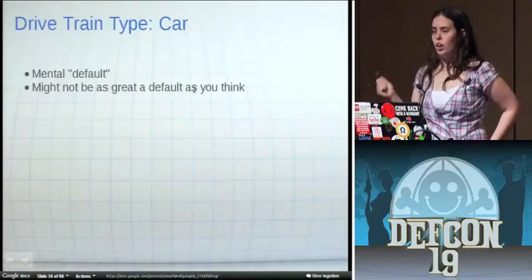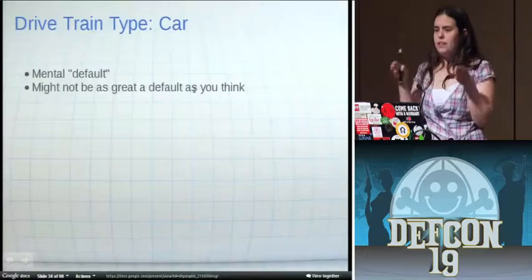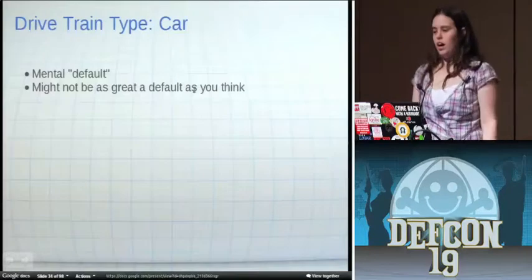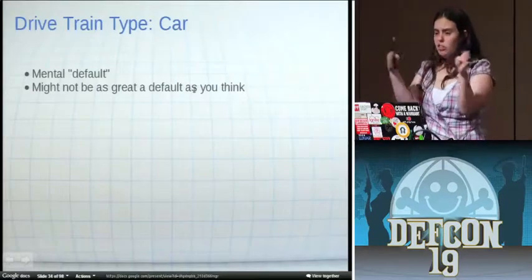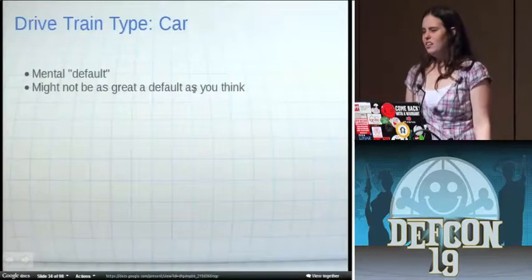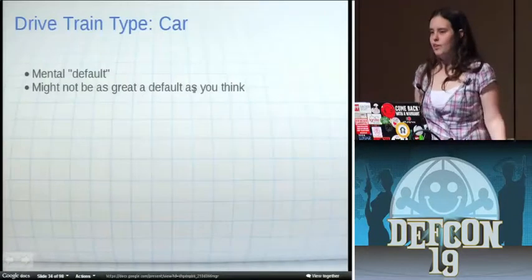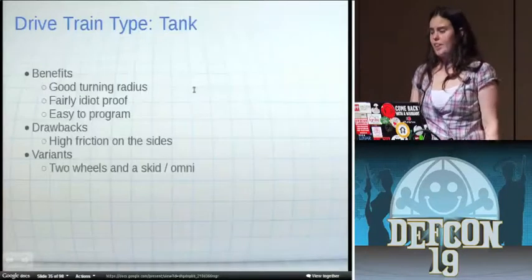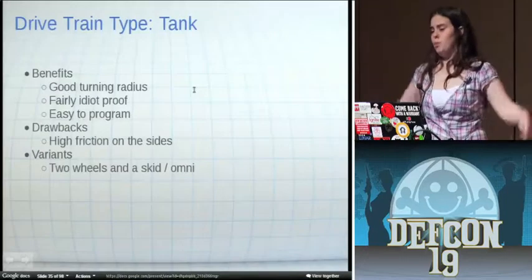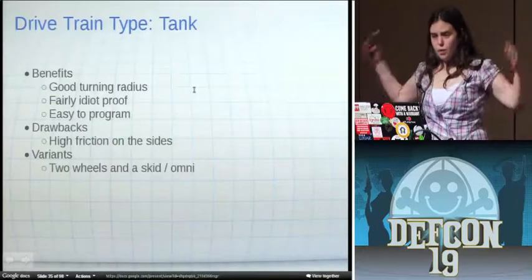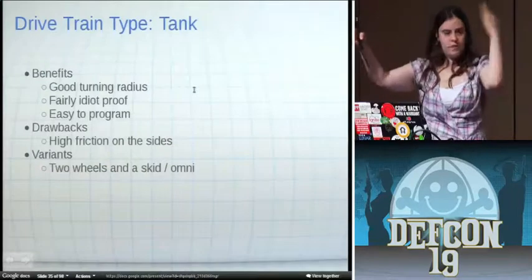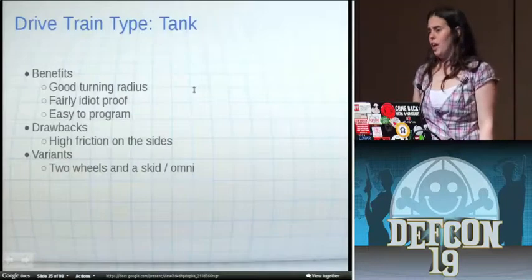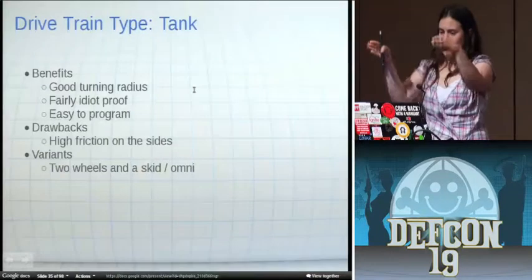The other thing that people default to is a car. All of you who drive know that cars aren't actually particularly nimble objects. They need to go forward in order to turn. Also making the wheels swivel properly is a pain in the ass. So unless you have a good reason for this, this is probably not the default that you want to go to. Tank is actually a pretty good default. Just put the wheels down the side, put them all forward to go forward, put these guys forward and these guys backwards to turn, turns on a dime, pretty clean. It'll scuff up everything if you care about that.